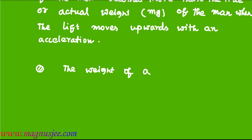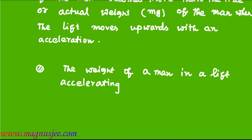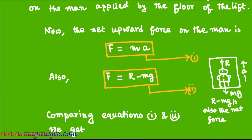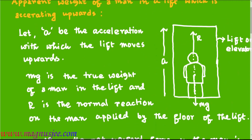The weight of the man in a lift accelerating upwards is greater than mg, meaning the apparent weight is greater than the actual weight of the man standing inside the lift. That is why we can say that the weight of the man in a lift accelerating upwards increases apparently. In the diagram, mg is the actual weight or true weight of the man standing in the lift, and R is the normal reaction, with the lift moving upwards with an acceleration A.